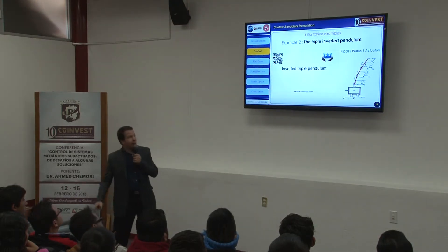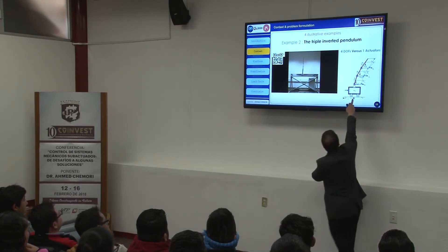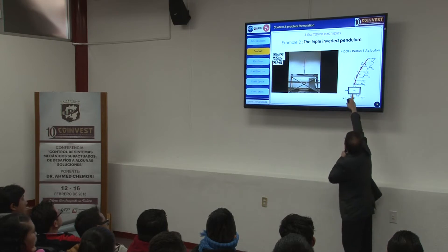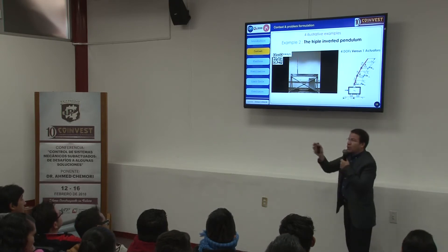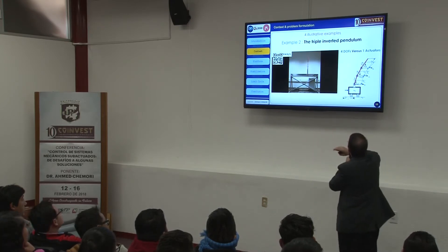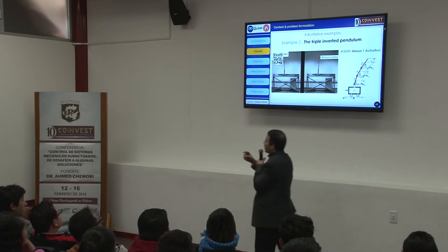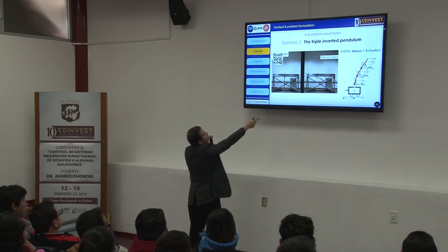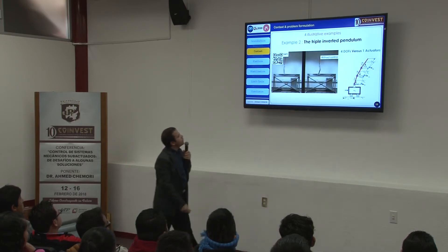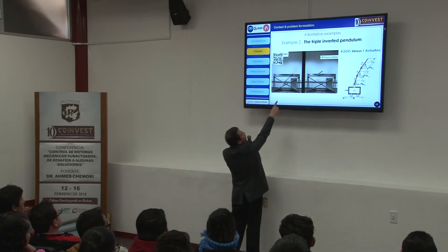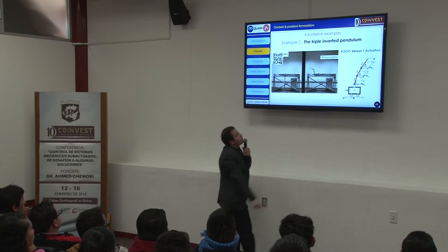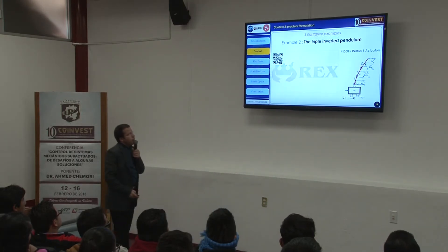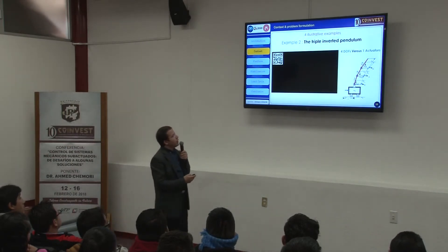The second example is an inverted pendulum — specifically a triple inverted pendulum with one, two, three joints and a cart that can move. We have four degrees of freedom and only one actuator on the cart. As shown in the video, with control the system is stabilized quickly; without control, the behavior is very complex and unstable. Four degrees of freedom, one actuator — it is underactuated.